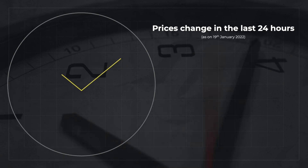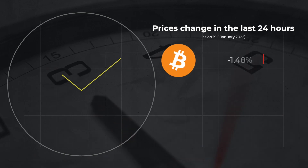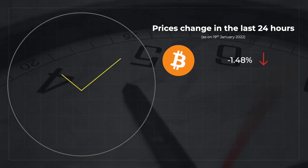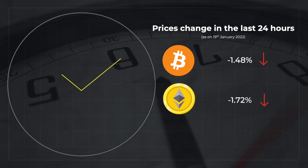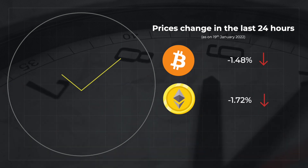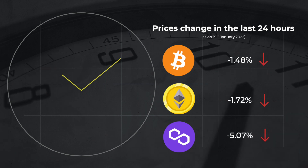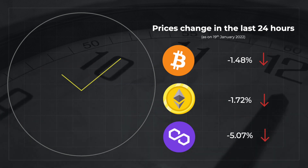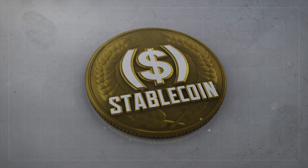However, in the last 24 hours, the price of Bitcoin has changed by 1.48%, Ethereum's price has changed by minus 1.72%, and Matic's price has changed by negative 5.07%. So for something that is this volatile, it becomes almost impossible that the masses will use these cryptocurrencies to carry out transactions on a daily basis. And this is where stablecoins come in.